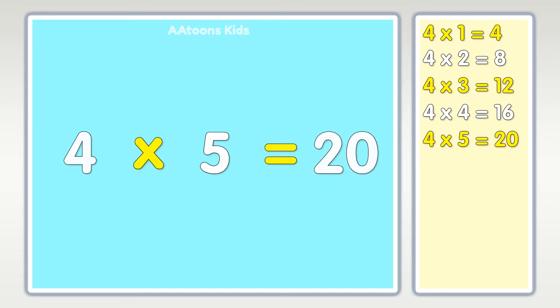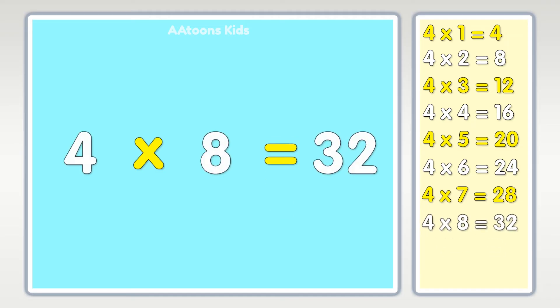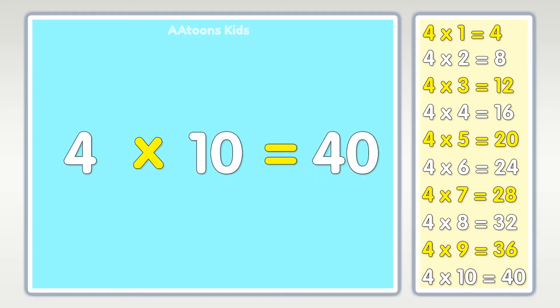Four times five is twenty, four times six is twenty-four, four times seven is twenty-eight, four times eight is thirty-two, four times nine is thirty-six, four times ten is forty.